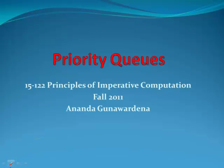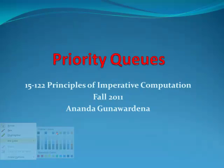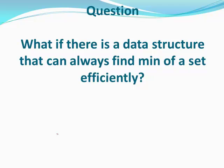In this lesson, we're going to talk about a new data structure called priority queues. We start with a simple question: what if there's a data structure that can always find the min of a set efficiently? If you have an array which is not sorted, finding a min would require O(n) operations, and we don't consider that to be efficient.